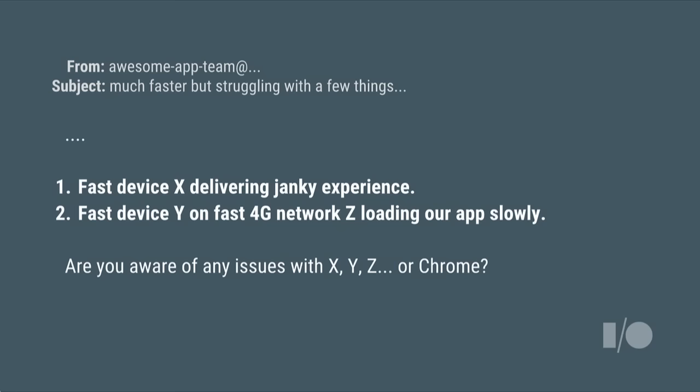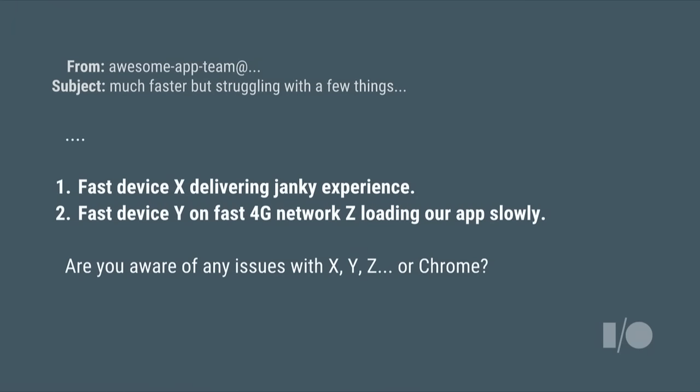They have audits, they even gather real user measurement data to understand how the app is performing. And then lo and behold, they look at the data and say: we made everything fast, we did all the things you told us. But despite that, we still have reports that there's this really fast device — in fact, maybe even the device I've been testing on locally — and it's not meeting my frame target, our 60 FPS limit. Or maybe the app is on a fast network but it's still loading really slowly. What is going wrong?